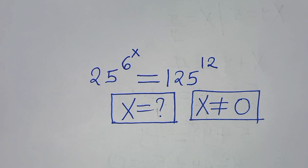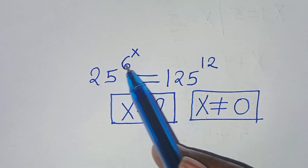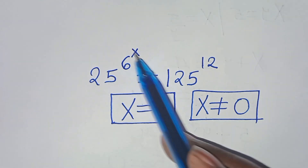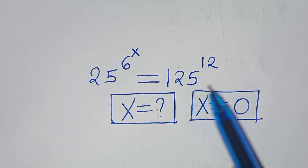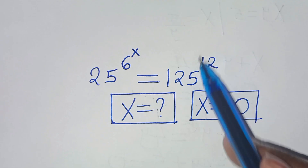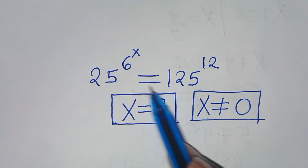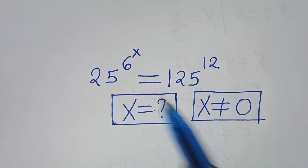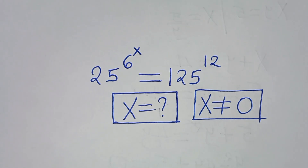Hello everyone, you're welcome to solve this nice exponential problem, which is 25 raised to the power of 6 raised to the power of x. This is equal to 125 raised to the power of 12. So what is the value of x, given that x is not equal to 0?